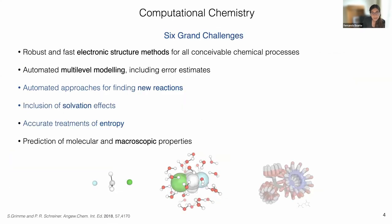Some of the limitations and the inspiration for the work that we do is summarized in those six grand challenges that Grimm and Dreiner mentioned in 2018. They said these are the six challenges we have to solve to make computational chemistry more reliable and more predictive. We are particularly interested in three aspects: how we can make the discovery of new reactions much faster, include solvation effects, and accurately compute entropy. Those are the main objectives of our work.